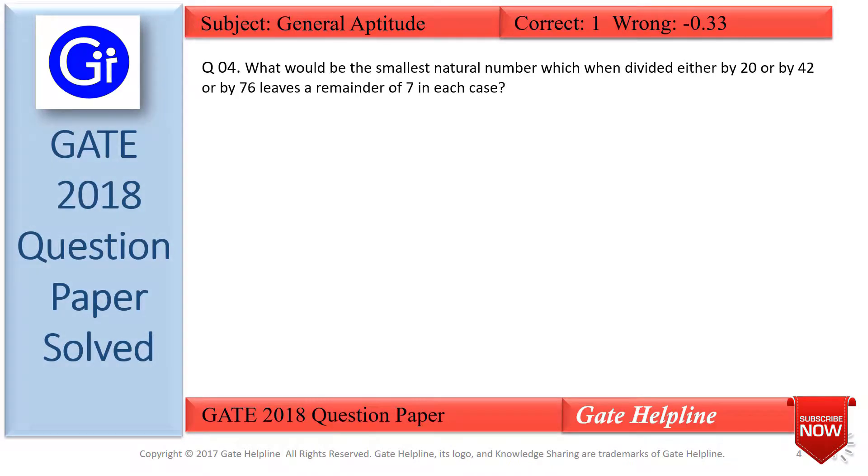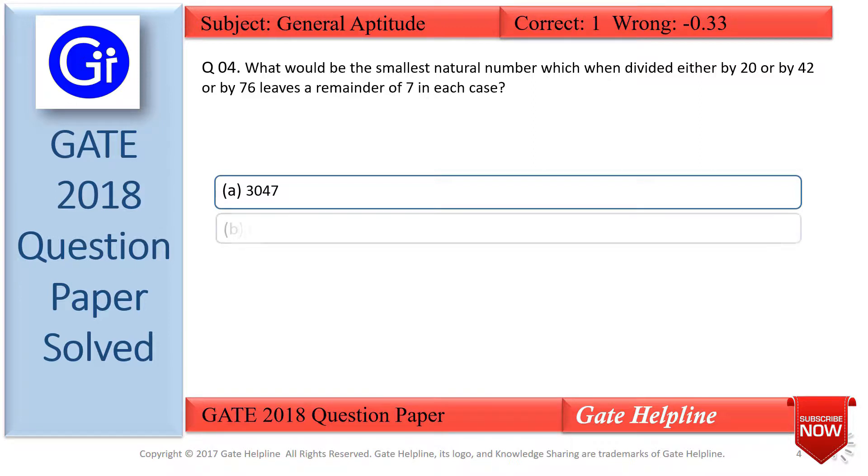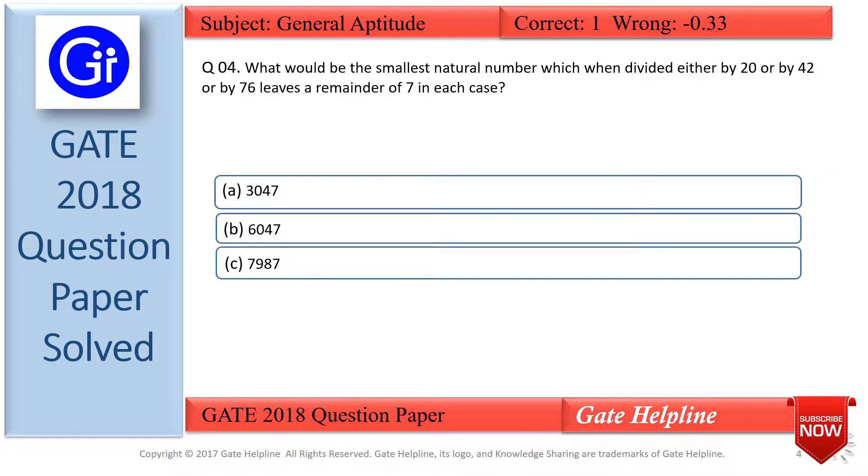Question number 4 is: what would be the smallest natural number which when divided either by 20 or by 42 or by 76 yields a remainder of 7 in each case? The options are (a) 3047, (b) 6047, (c) 7987, or (d) 63847.